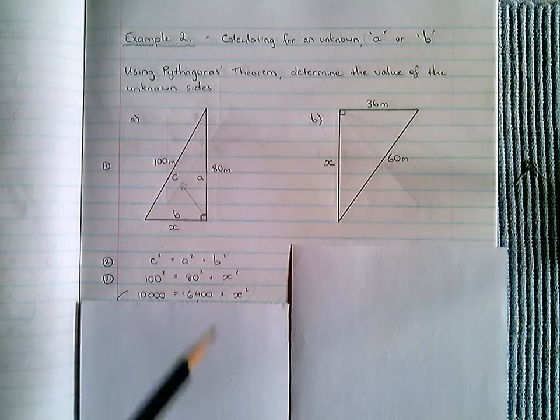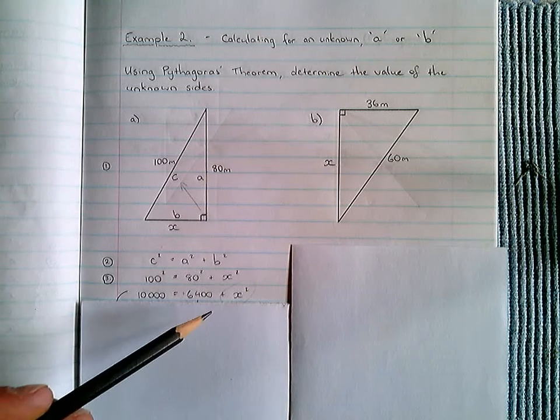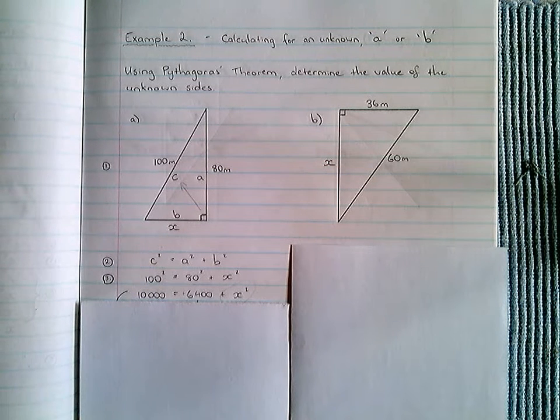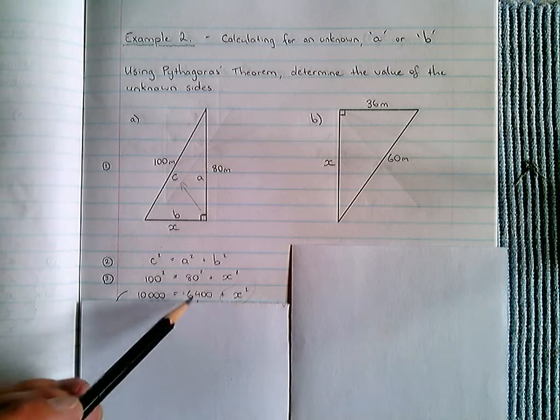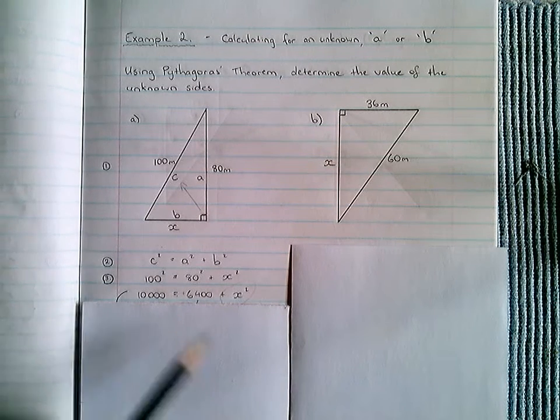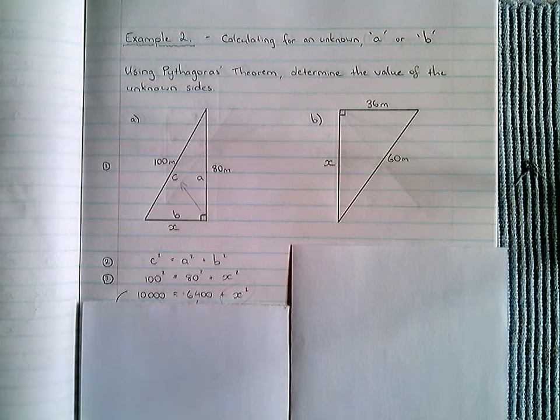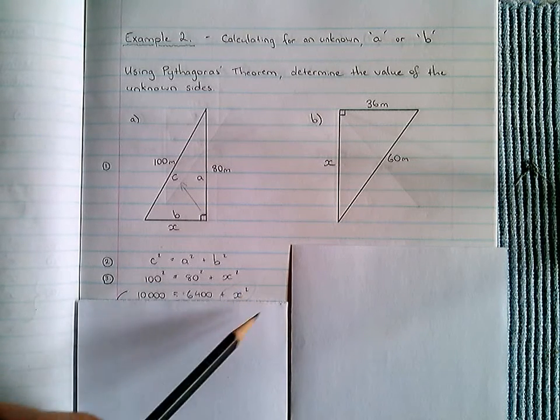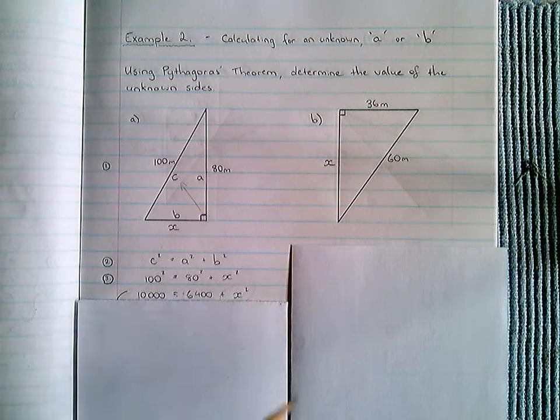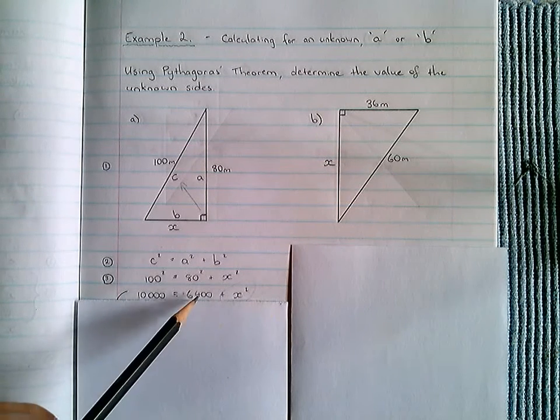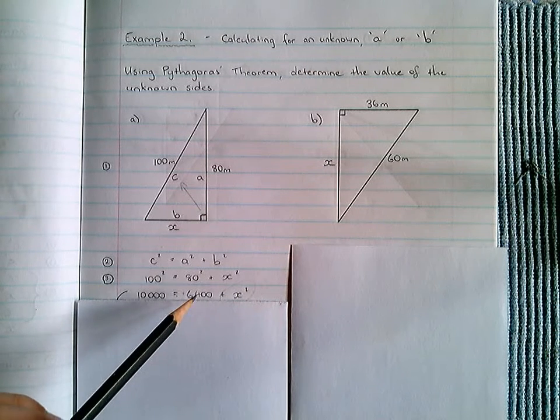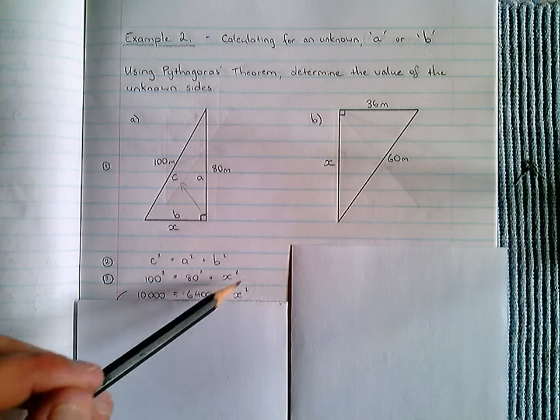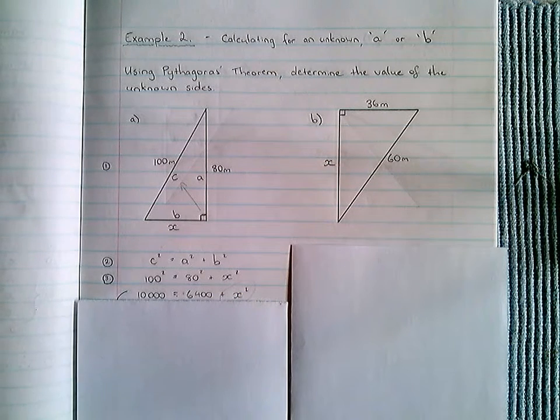What we have to do is get this X squared by itself. At the moment, we've got 6400 plus X squared. If we had X squared by itself, we would have a situation very similar to example 1. So, we go about getting X squared by itself by removing this 6400 from the right-hand side of the equal sign. If we remove this 6400, we'll be left with X squared. Now, it would be nice if we could just simply cross it out and remove it, but that's not how we go about doing it. To get rid of this 6400 from this right-hand side, if I were to take 6400 from this side, we would be left with 0, because we've got 6400 take 6400, which results in 0, which would simply leave us with X squared, which is how we're going to go about solving this problem.